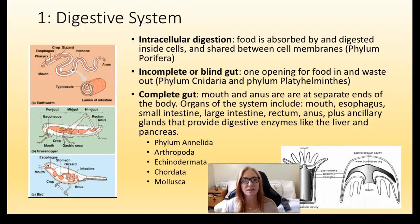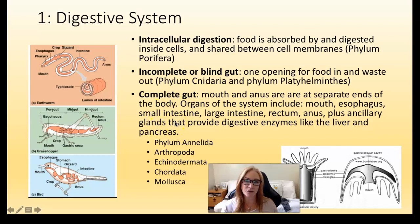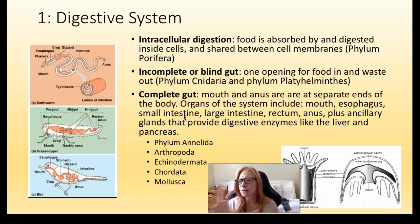Then we start to get into more complicated animals. The first level of digestion is called an incomplete or blind gut. These are animals that just have one opening at one end of their body that serves as both mouth and anus — food goes in and solid waste goes out that same opening. Remember, Hank eloquently called it the manus. These are diploblastic animals. Then we have a complete gut in triploblastic animals — either deuterostomes or protostomes — where you have a mouth at one end and an anus at the other, and what isn't digested moves out.